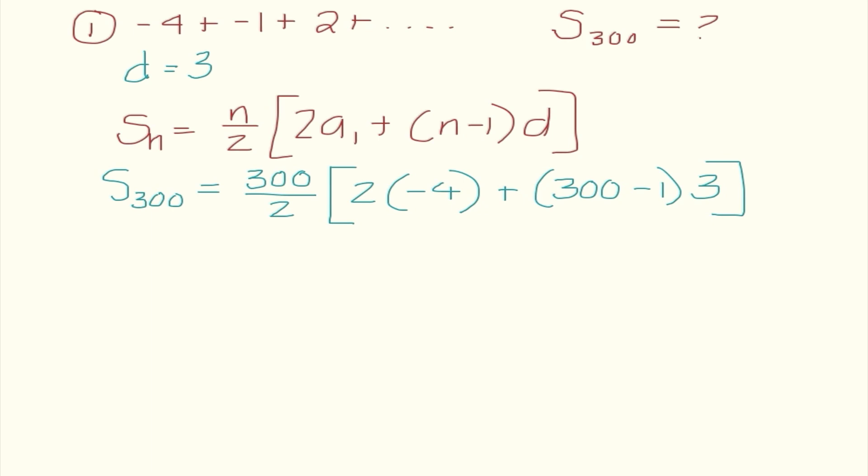So if we look, this problem in itself isn't that bad because I already have my unknown value isolated so we just need to do some simple math here. So I get the sum after 300 terms is 150 times negative 8 plus 299 times 3. And when I go ahead and put that into my calculator, I end up getting that the sum after 300 terms is 133,350.